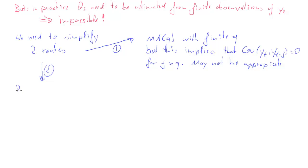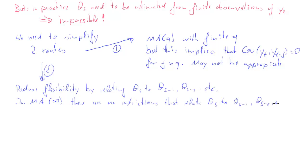The second route we could go is that we reduce the flexibility by relating the MA coefficients to each other. Theta s, we can relate that to its previous value and the value beforehand, theta s minus 1, theta s minus 2, for instance. In an MA infinity process, there is nothing that relates these coefficients. They can take values independent from each other. Now, what we do now is that we relate theta s to theta s minus 1 according to this: theta s is equal to phi 1 times theta s minus 1 for any s larger than 1 and also recall that theta 0 is equal to 1.